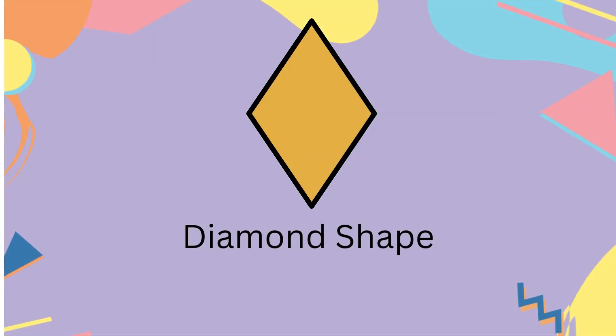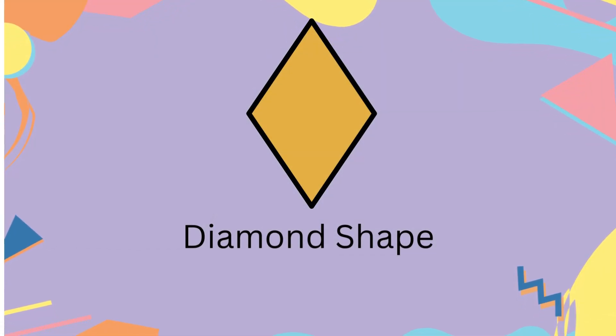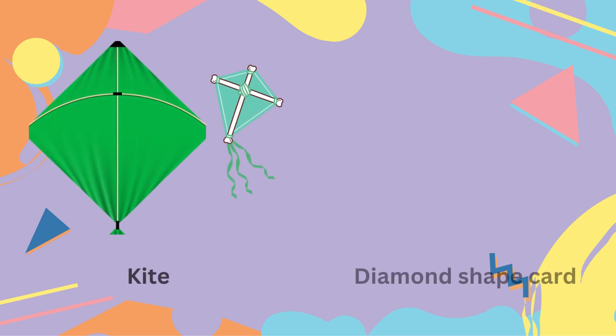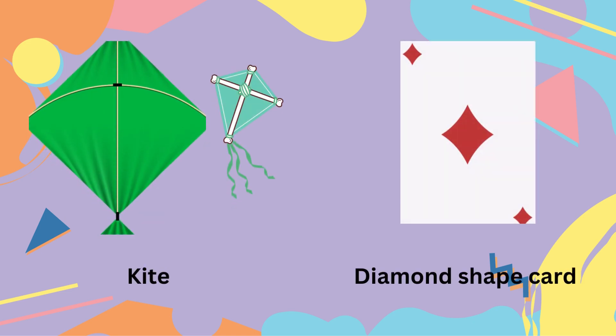It is a diamond shape. Examples of a diamond shape are a kite and a diamond shape card.